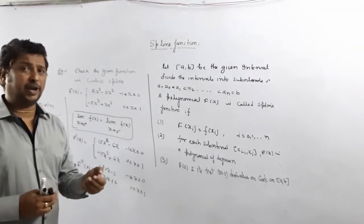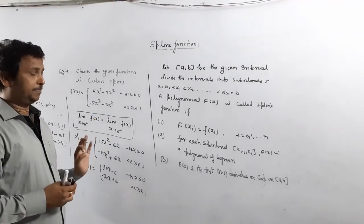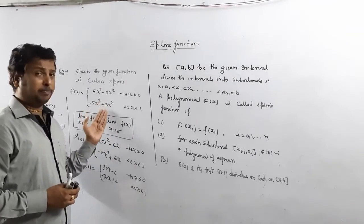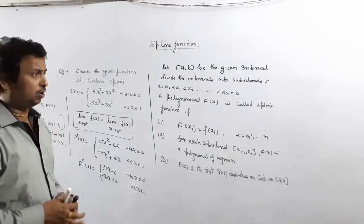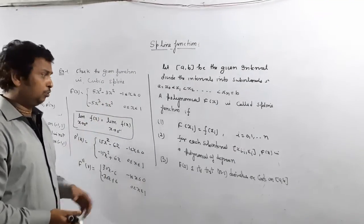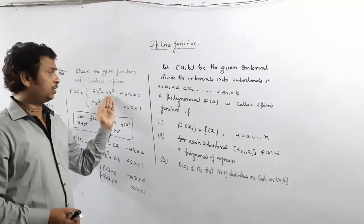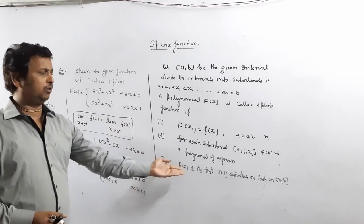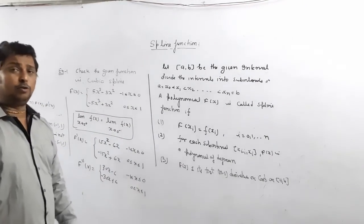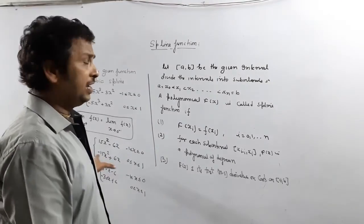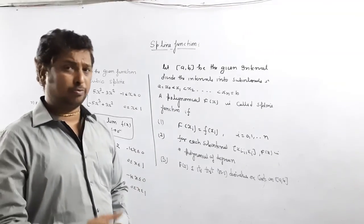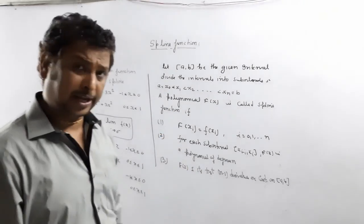I hope you all understand how to check if a function is a spline or cubic spline. For a cubic spline, since it is a third-degree polynomial, you just need to check that the function and its derivatives up to the second order are continuous. In the next lecture I will explain how we find a cubic spline. Thank you.